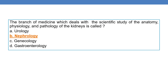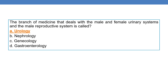Nephrology is the branch of medicine that deals with the scientific study of anatomy, physiology and pathology of the kidneys. The branch of medicine that deals with the male and female urinary system and male reproductive system is called urology. Option A is the correct answer.